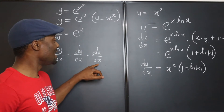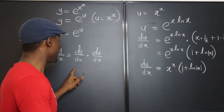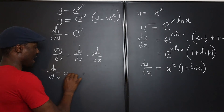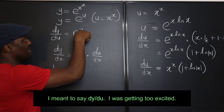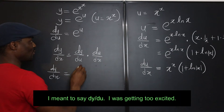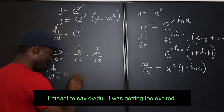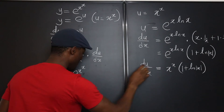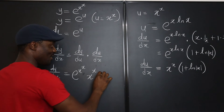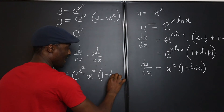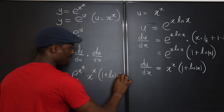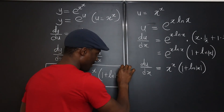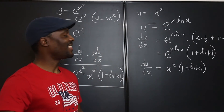That elusive du/dx that we didn't have at the beginning — now we have it. Let's write our answer. dy/dx equals dy/du times du/dx. What is dy/du? It's e to the u. What is u? x to the x, which is the original problem. So dy/dx is e to the x to the x, multiplied by x to the x, times one plus ln of the absolute value of x. That's what we're looking for.